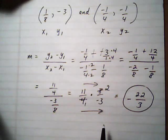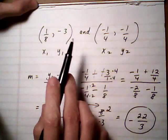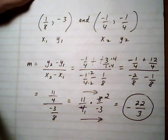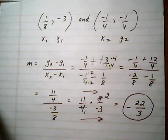So again you can try this one out by switching who's point 1 and who's point 2, and just see if you get the same answer. You should get minus 22 over 3.